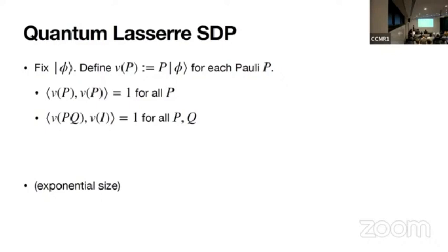So if you inner product v of P and v of P, then it's 1. If you inner product v of PQ and v of I, it's the same as v of P inner product v of Q, because Paulis are permutation.